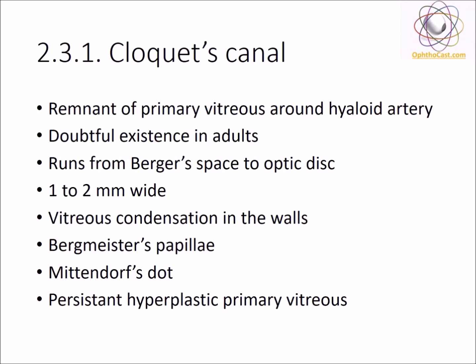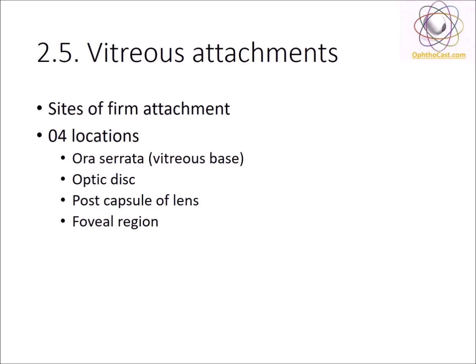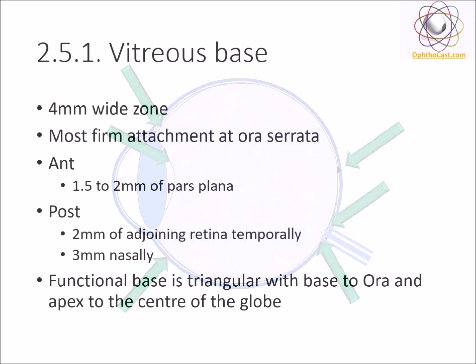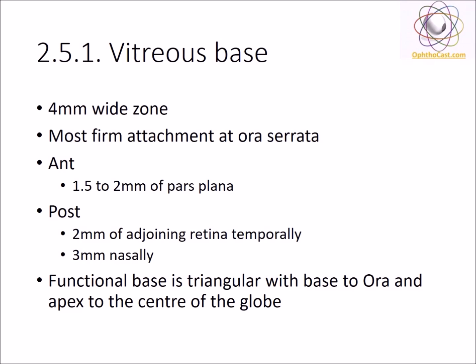The vitreous is strongly attached to the peripheral structures at four places: the ora serrata, the vitreous base, the optic disc, the posterior capsule of the lens, and the foveal region. The vitreous base is a 4 mm wide zone overlying the ora serrata and is the site of the firmest attachment. It covers 2 mm of the pars plana and also some area of the retina — 2 mm temporally and 3 mm nasally to be precise.